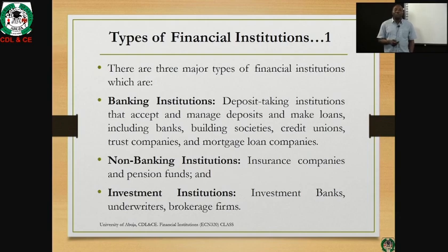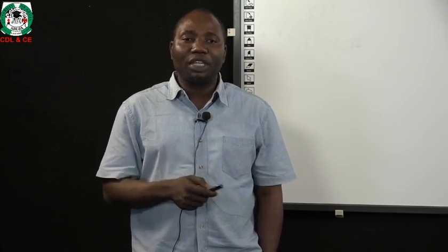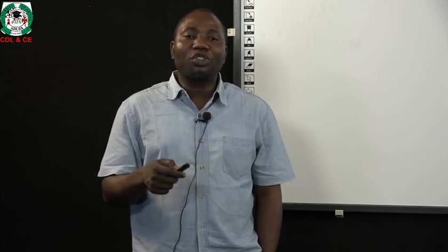Moving on to types of financial institutions, there are three categories which we'll discuss in detail in session two. The first is banking institutions — deposit-taking institutions such as commercial banks, building societies, credit unions, trust companies, and mortgage loan companies that take deposits, make loans, and manage deposits. The second is non-banking institutions such as insurance and pension funds. The third is investment institutions, including investment banks, underwriters, and stockbroker firms.